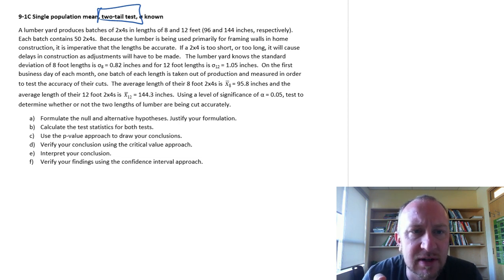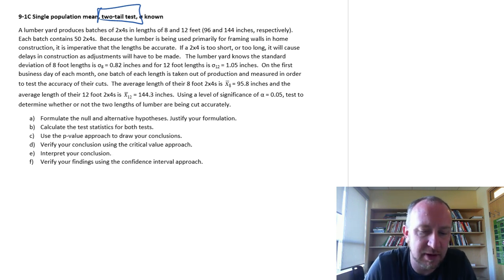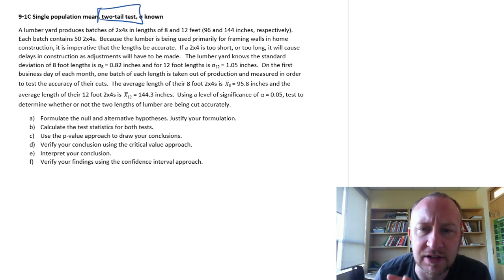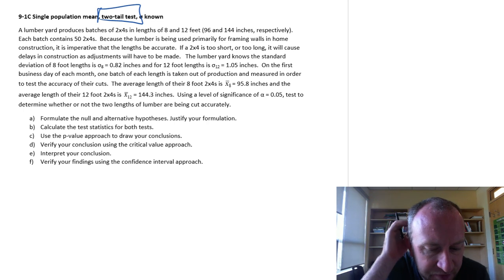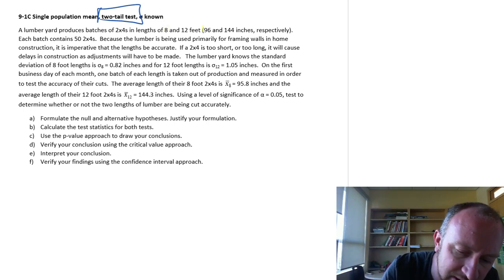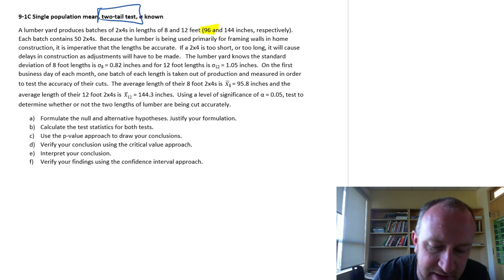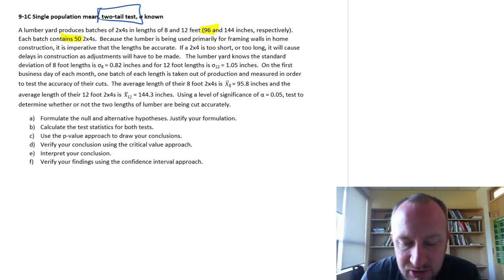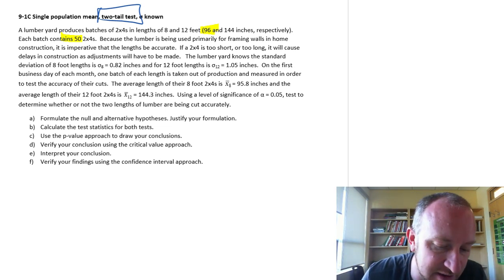So let's just get into it. Here we're looking at a lumber yard that produces batches of 2x4s in lengths of 8 feet and 12 feet. For this video, I'll just look at the 8 foot exercise, so we're going to look at the 96 inch 2x4s. Each batch contains 50. Because the lumber is being used primarily for framing walls and construction, it's imperative that they be accurate. We don't want them to be too short or too long as this will cause delays in construction.